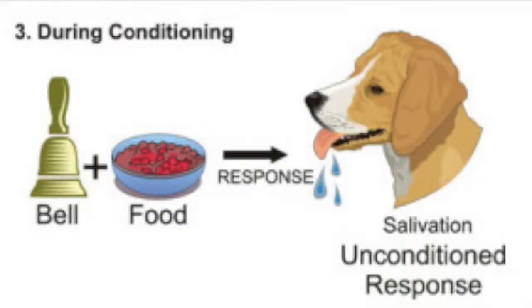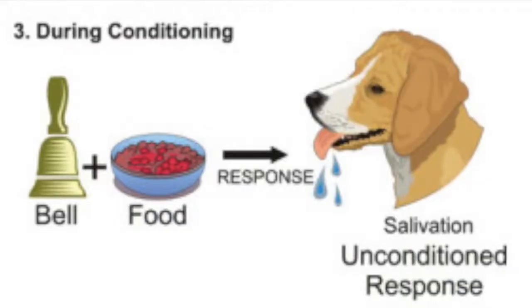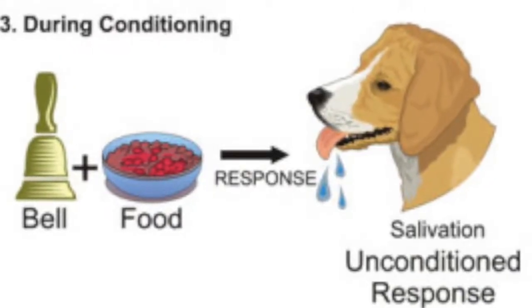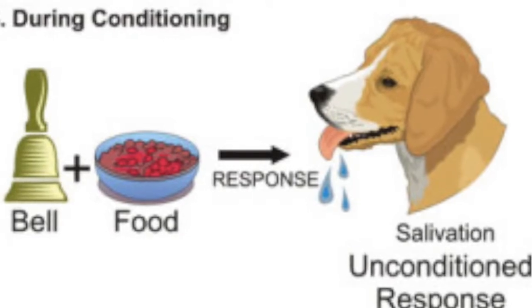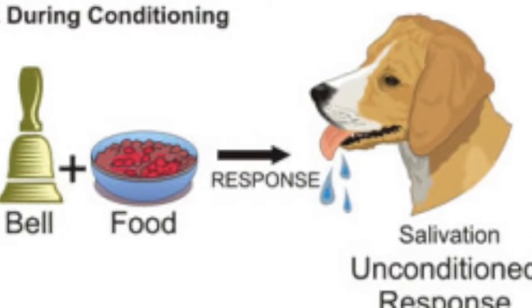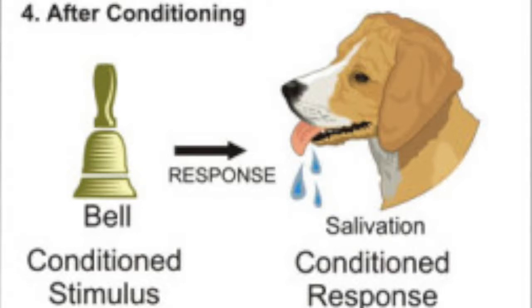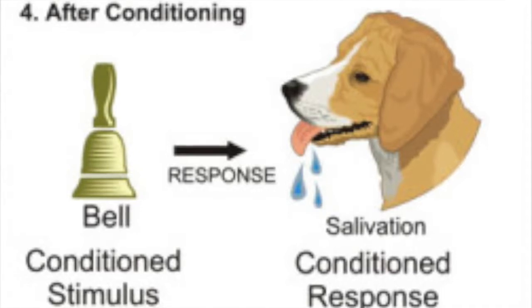The second part of the experiment involves using a bell. The bell would precede the food — the bell rings, then the food comes out, and the dog salivates over the food. That's the second part, but the main finding of classical conditioning comes after the experiment has been conducted many times.